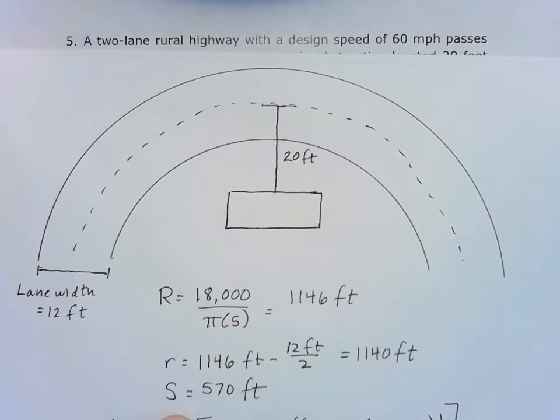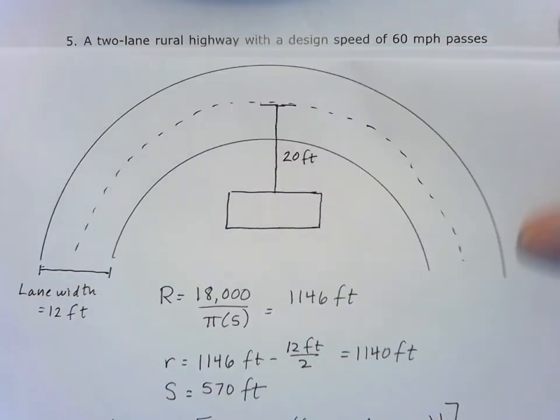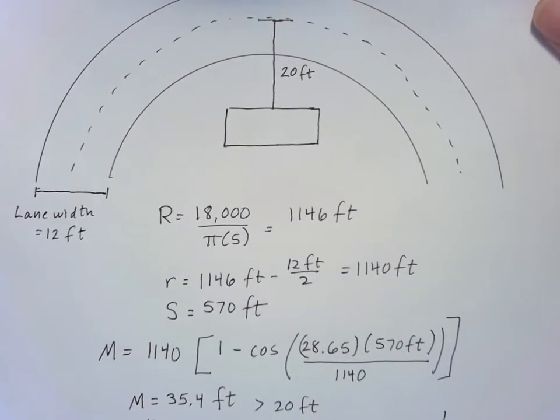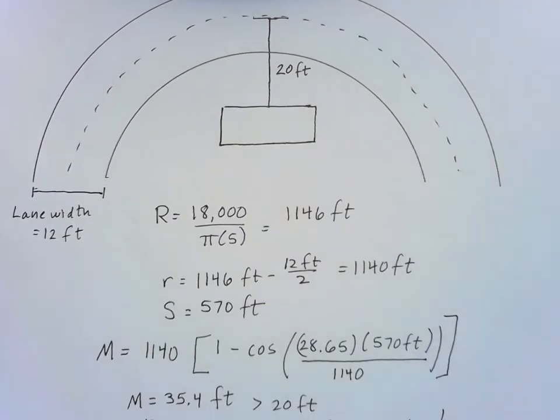And my stopping site distance S, I can get from my stopping site distance with my velocity table, 60 miles per hour, I'll get a stopping site distance of 570. So when I plug all those values into my M, or HSO, equation, I wind up with 35.4 for my M value.